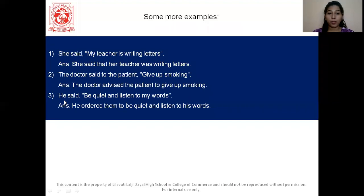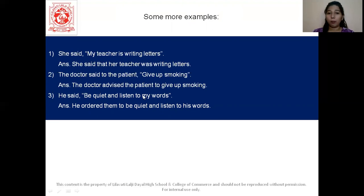Let us see the third example. 'He said be quiet and listen to my words.' This is an order or a command, so we use the word 'ordered.' It becomes: 'He ordered them to be quiet and listen to his words.' Notice 'my words' became 'his words' — we saw this in the conversion table. So that is all, students, on direct and indirect speech. If you remember the rules of conversion properly, you will be good to go with this topic. Thank you so much.